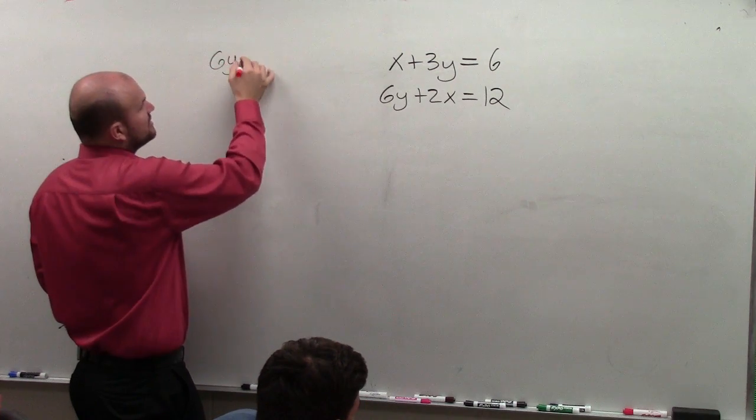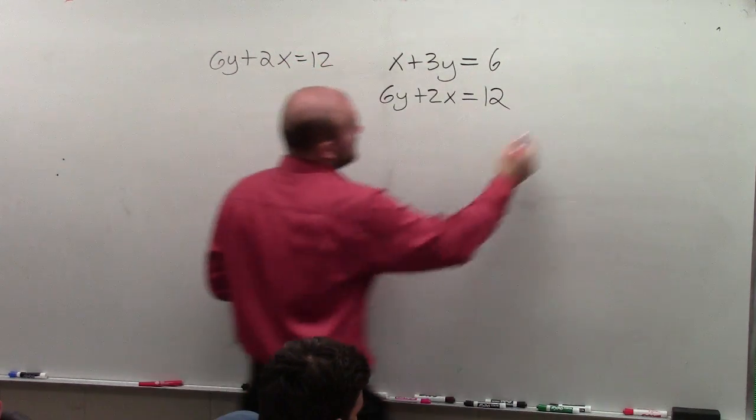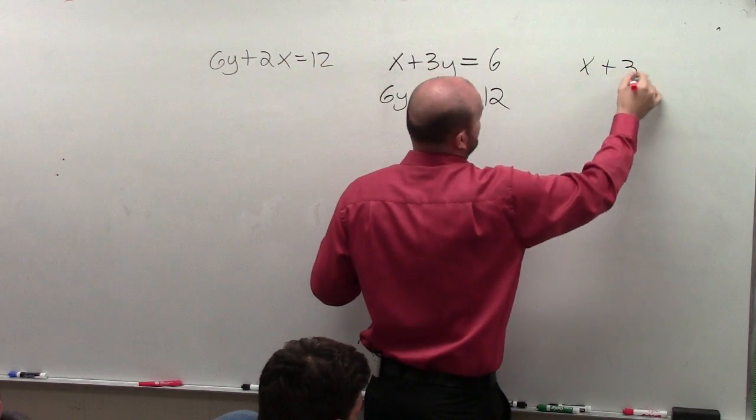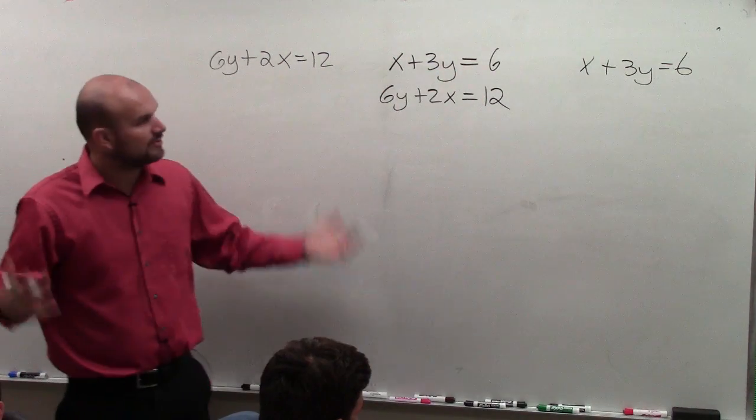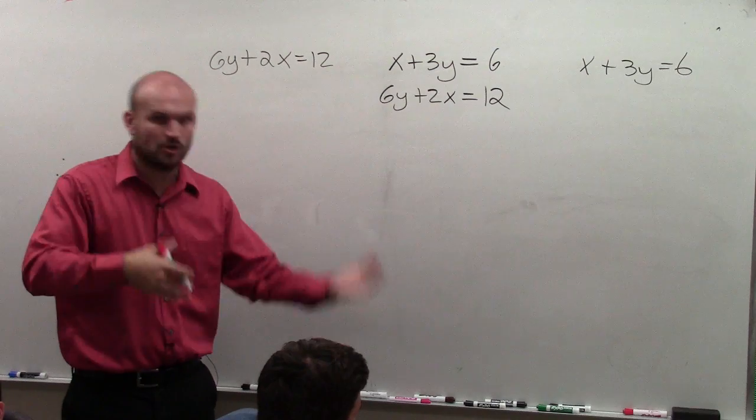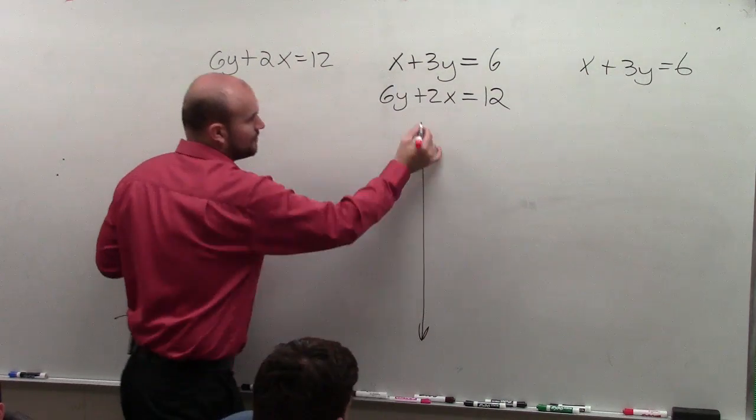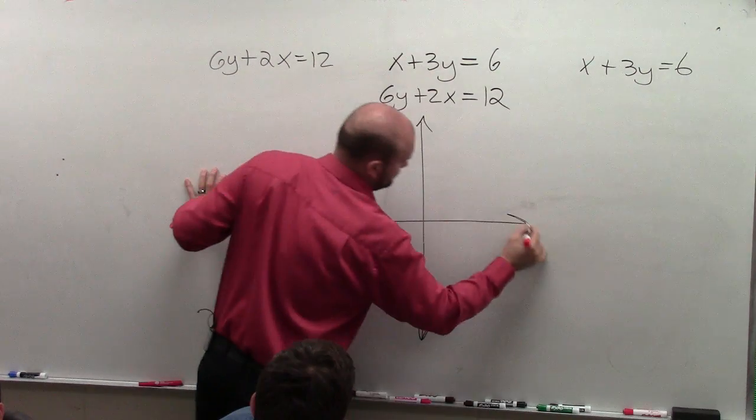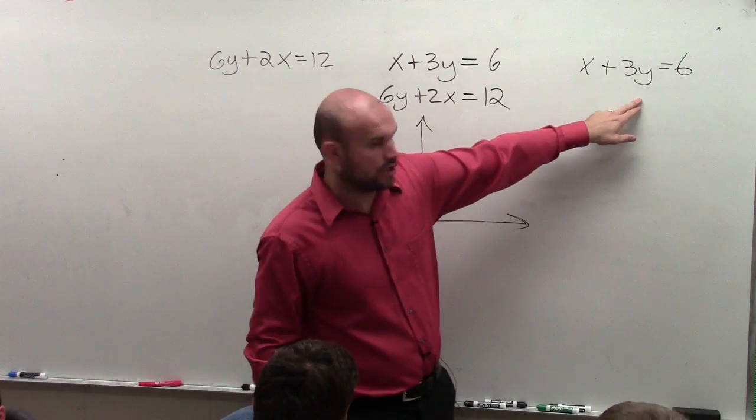The first way, both of these you understand are in standard form. And we like it when we have an equation that's in slope-intercept form. Because hopefully, when you guys remember graphing, graphing something in slope-intercept form is fairly basic, right? Identify the slope. Identify the y-intercept. And you go ahead and graph it. So basically, that's what we're going to do. I am going to solve for y.